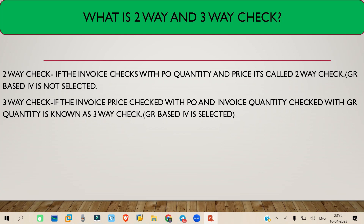These two-way and three-way checks are related to the invoicing process. In the purchase order, if you have not selected the GR-based invoice verification checkbox, then the PO quantity and PO price will be directly fetched to the invoice. This is called a two-way check because it checks two things from the purchase order — the price and the quantity — and copies both from the PO to the invoice.